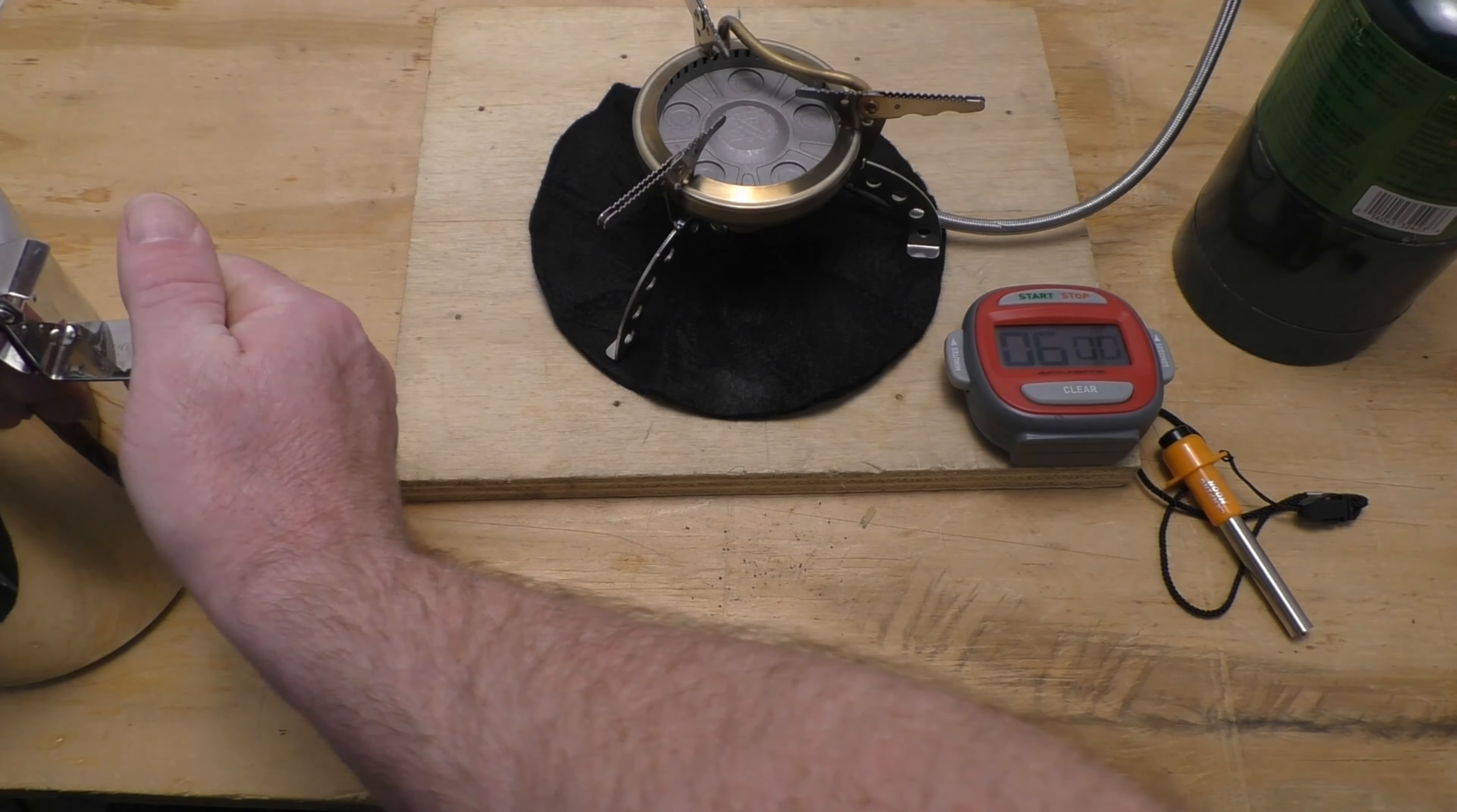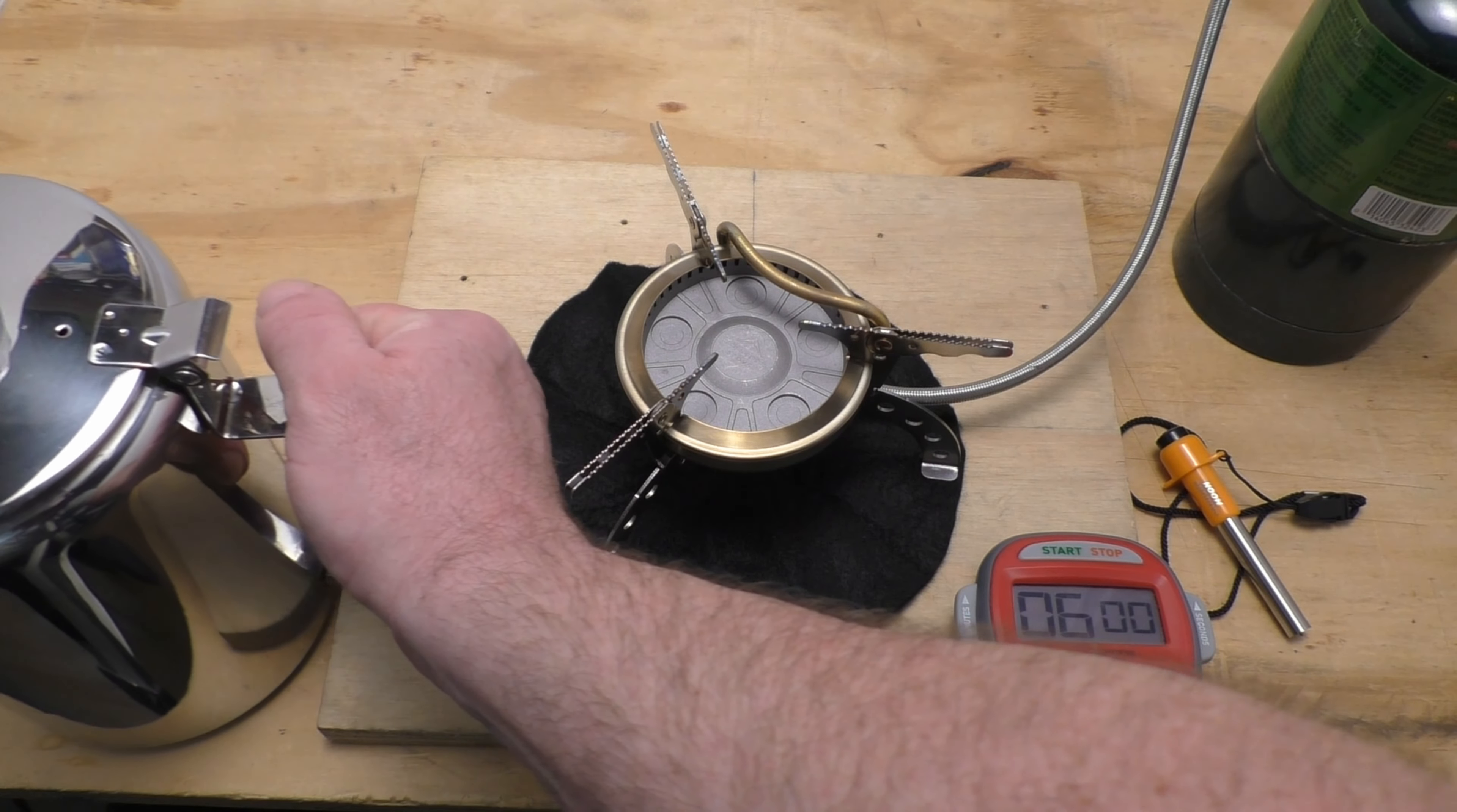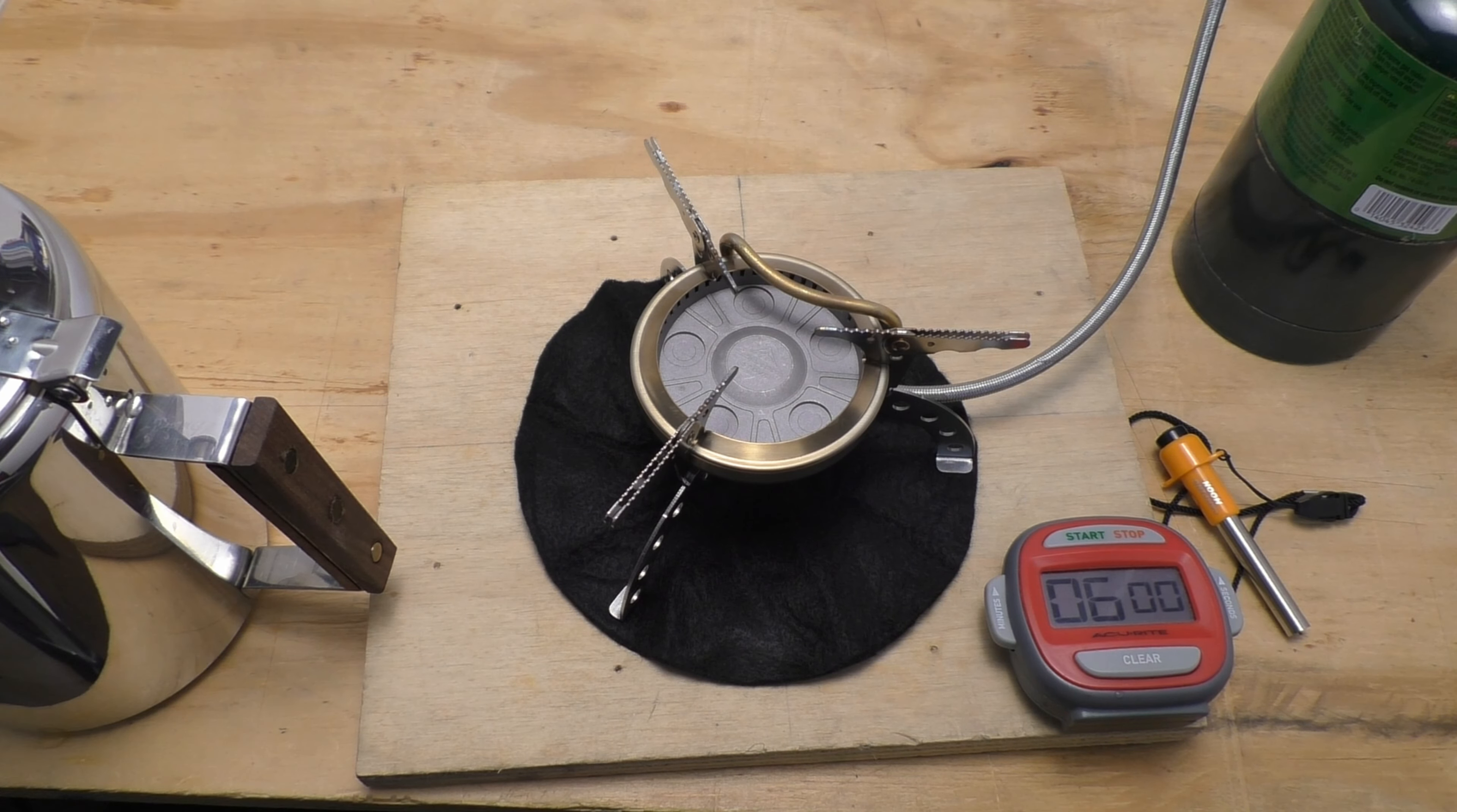So let me give you some general rules when you're doing this. Average, you want to perk for five minutes once it starts to perk, once you see it in the glass. Once you start seeing it perk here, you go above five minutes if you want stronger coffee. Now I wouldn't perk for more than ten minutes.